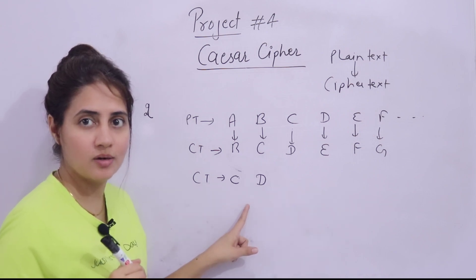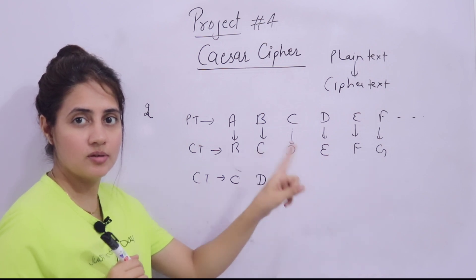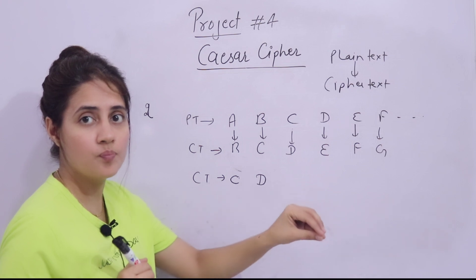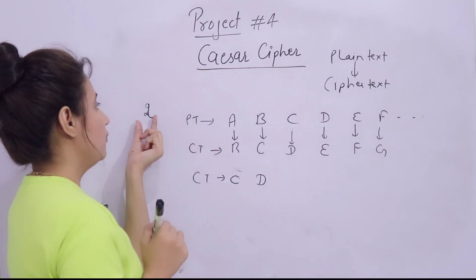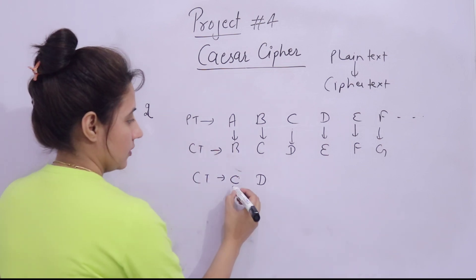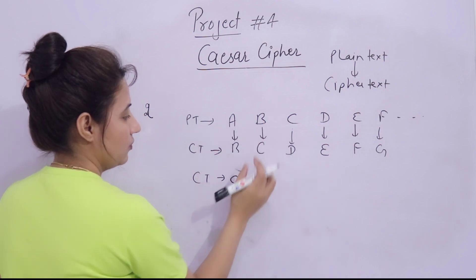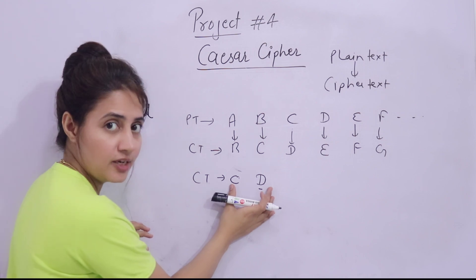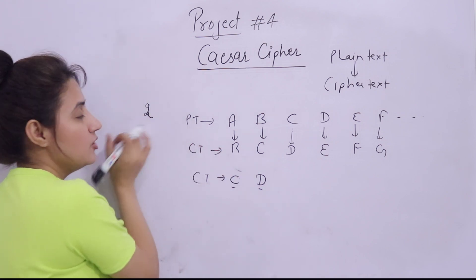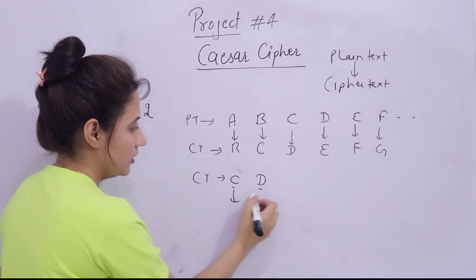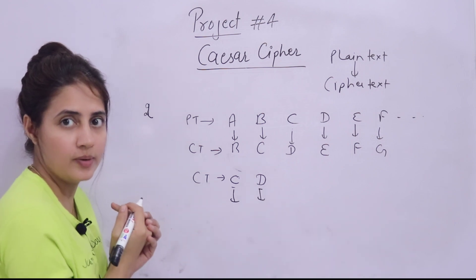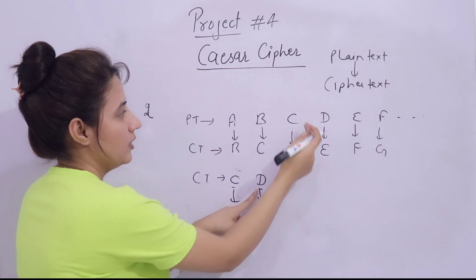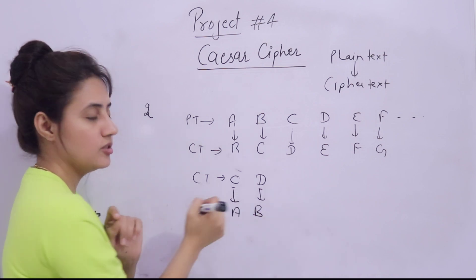This is how encryption is done. At the receiver end, decryption would be done as follows: if the shift key is 2, we sent 'c' and 'd' rather than 'a' and 'b'. So at the receiver end, the cipher text with key 2 means we shift 'c' and 'd' backward by 2 places. So 'c' goes back 2 places to 'a', and 'd' goes back 2 places to 'b'. This is decryption.